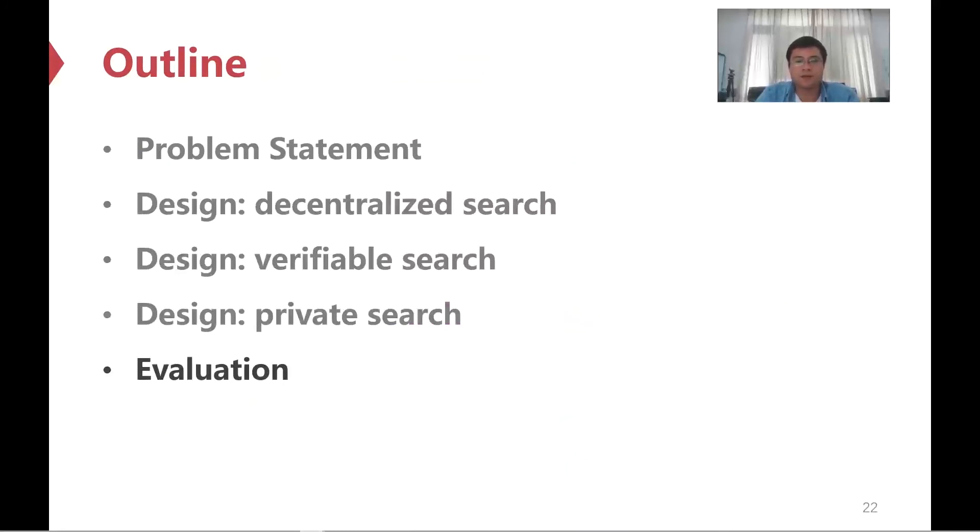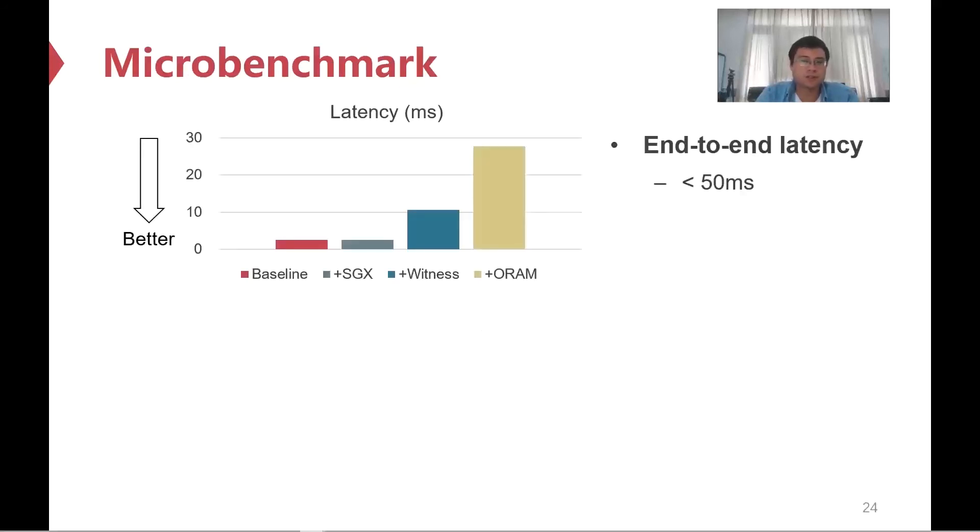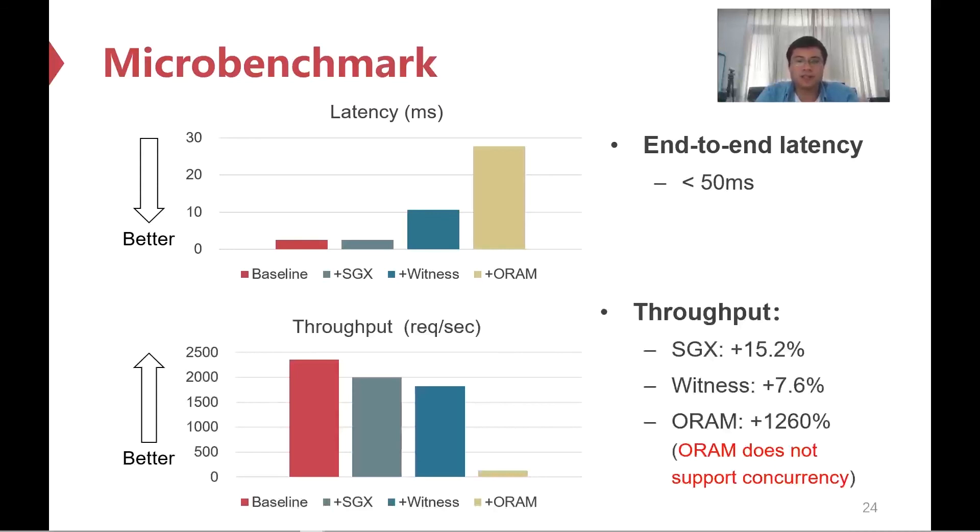Let us take a look at the performance of D-Search. We build a D-Search prototype and use it to serve two systems, Steemit and OpenBazaar. We use nine SGX-enabled machines in our lab and further deploy our system on AWS for large-scale deployment. For a single keyword search, we show the overhead by measuring the non-SGX version as the baseline, using SGX protection for Lambda, adding witness tree generation, and using ORAM for privacy protection. The end-to-end latency is within 50 milliseconds, meaning that our user experience is as good as today's search engines. The throughput drops dramatically when ORAM is applied, because the ORAM we use does not support concurrency, but offers good protection against side-channel attacks.